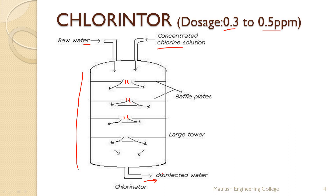This chlorination disinfection is done in a chlorinator — a long cylindrical tower with a number of baffle plates. These baffle plates have small slits or exits that make water and chlorine mix thoroughly, so that disinfection action takes place very efficiently.